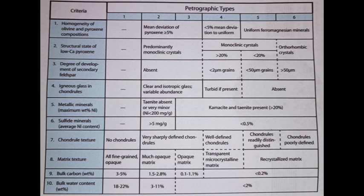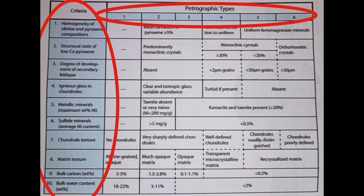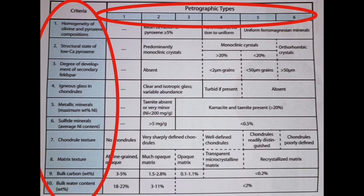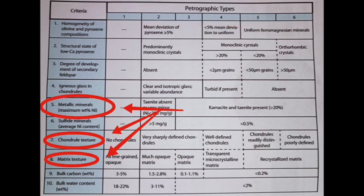This system categorizes chondrites into six petrographic types, ranging from type 1 to type 6, based on 10 criteria including meteorite composition, chondrule and matrix texture, bulk carbon content, and metallic minerals. For simplicity, we will focus on three criteria that can be easily observed by the naked eye or microscope: chondral texture, matrix texture, and metallic mineral content.